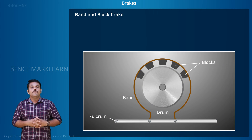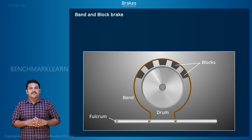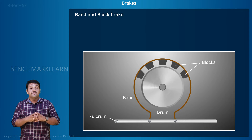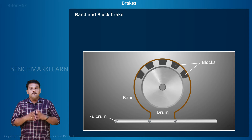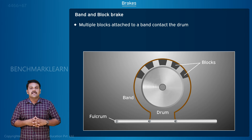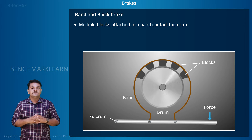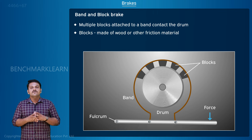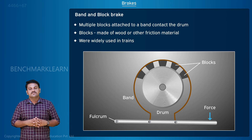Band and block brake: the working of a band and block brake is similar to a band brake. The difference is that instead of the band directly contacting the rotating drum, multiple blocks attached to the band contact the drum. These blocks are made of wood or some other frictional material. These brakes were widely used in trains.